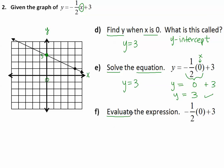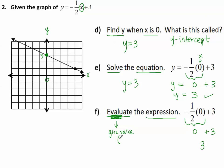Now evaluate the expression negative 1 half times 0 plus 3. There's no equal sign, so it's an expression — I evaluate it. Do the multiplication first: this is 0. Then 0 plus 3 makes 3. I have a value, not an equation as an answer, but a number. Remember: evaluate, just give a value, and a value is a number.